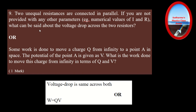There is also a choice here. Two unequal resistances are connected in parallel. If you are not provided with any other parameters — such as numerical values of I and R — what can be said about the voltage drop across the two resistors? This is very clear: when resistors are connected in parallel, the potential difference is the same across both resistors. So the voltage drop is the same. You easily get one mark.